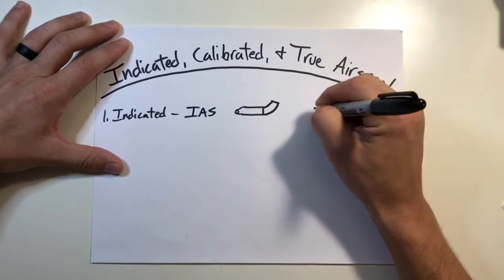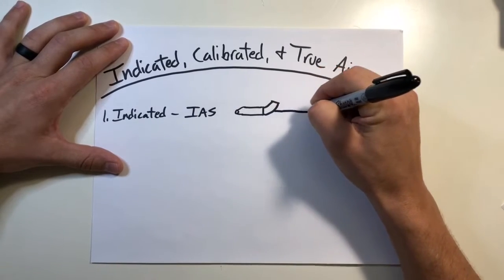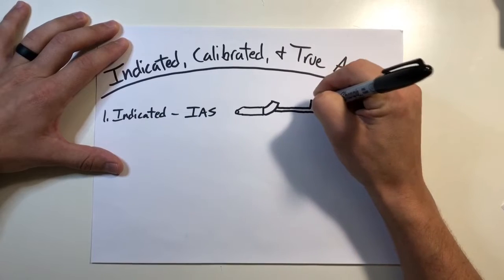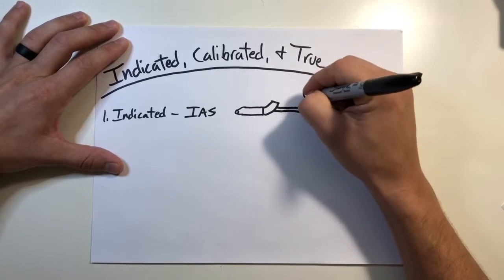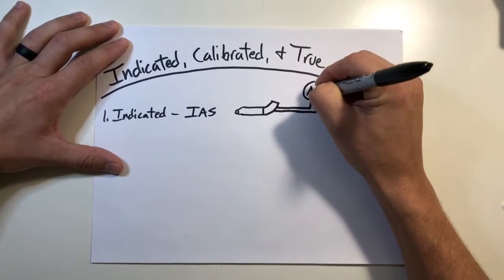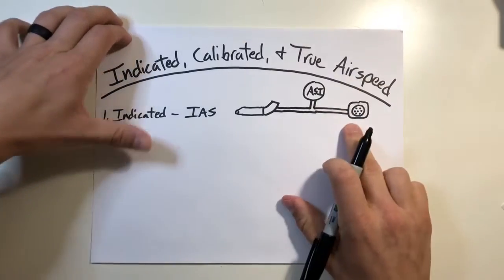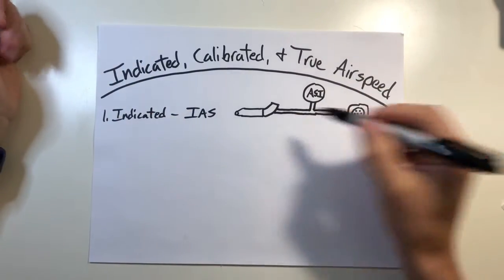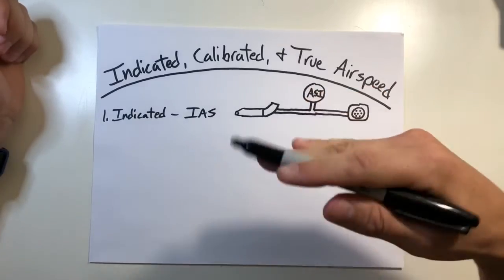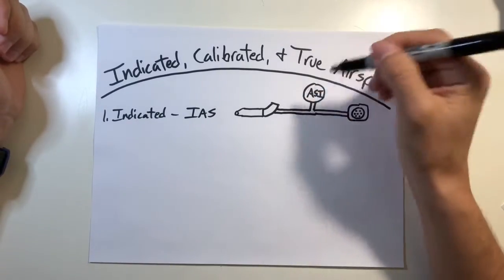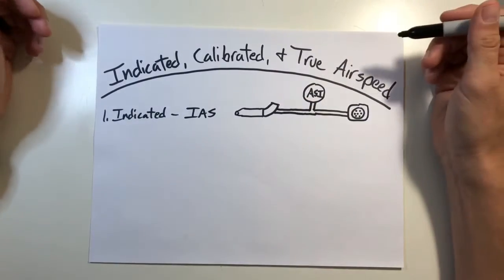In between both of these, you're going to have a gauge, which is going to be an airspeed indicator. The airspeed indicator is saying, okay, we have this much difference between the static pressure and this ram air pressure. It moves a needle a certain bit, and this is giving you a reading for an indicated airspeed.